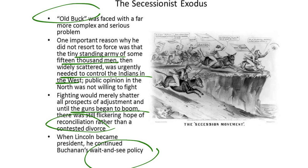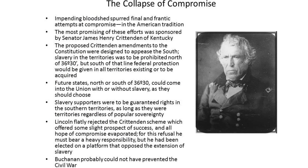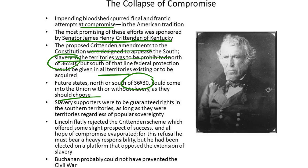When Lincoln became president, he continued Buchanan's wait-and-see policy. Impending bloodshed spurred final and frantic attempts at compromise. The most promising of these efforts was sponsored by Senator James Henry Crittenden of Kentucky. The proposed Crittenden amendments to the Constitution were designed to appease the South. Slavery in the territories was to be prohibited north of the 36°30' parallel, but south of that line, federal protection would be given in all territories existing or to be acquired. Future states north or south of the 36°30' parallel could enter the Union with or without slavery as they should choose. Slavery supporters were to be guaranteed rights in the Southern territories, as long as they were territories, regardless of popular sovereignty. Lincoln flatly rejected the Crittenden scheme, which offered some slight prospect of success, and all hope of compromise evaporated.